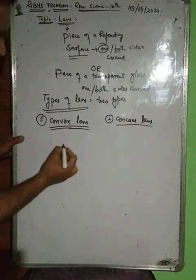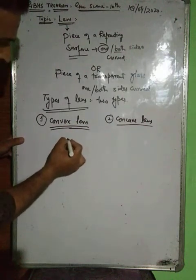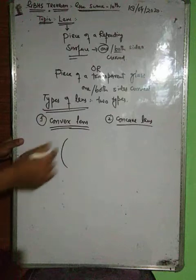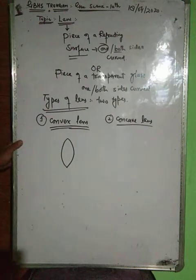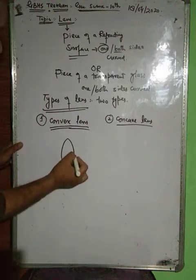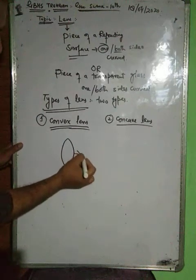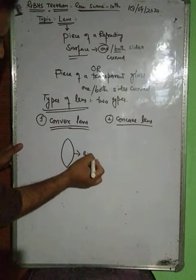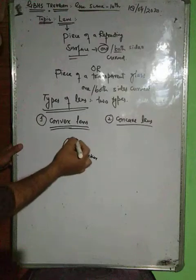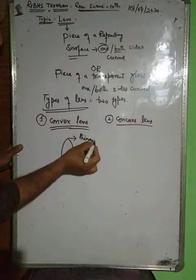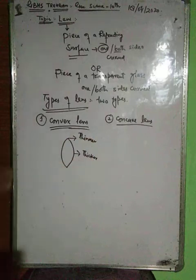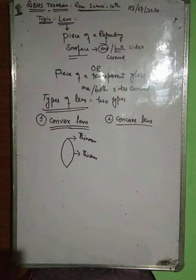A convex lens is that lens in which the curved surfaces are linked with each other in such a way that in the middle they are thick, but at the edges they are thin. Such a type of transparent glass is known as a convex lens.